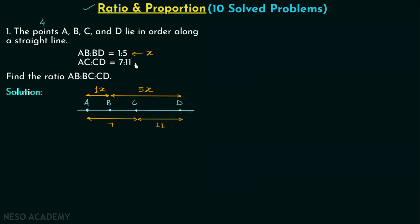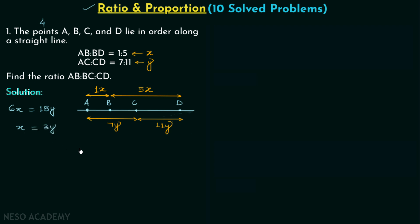Similarly, in the second ratio, let's say the common factor is y, so we will have 7y and 11y. When you focus on the length AD, it is equal to 1x plus 5x, and it is also equal to 7y plus 11y. So we can say 6x equals 18y, giving us the very important relation x equals 3y.